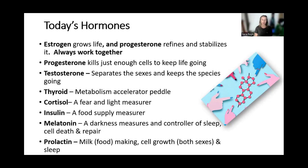Estrogen basically grows life, and progesterone refines and stabilizes it — they always work together. Progesterone kills just enough cells to keep life going and is really important in apoptosis, including killing unwanted cells such as cancer cells, yet it is greatly overlooked. Testosterone, simply put, separates the sexes and keeps the species going.